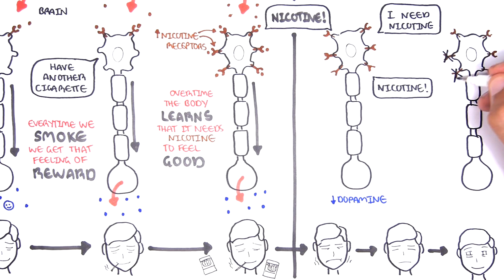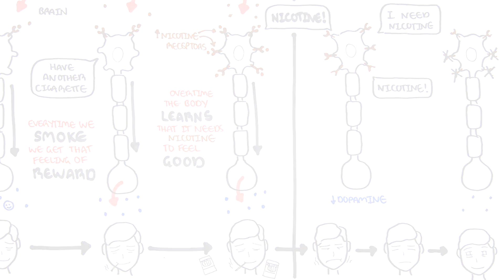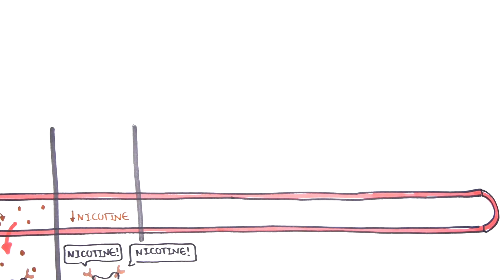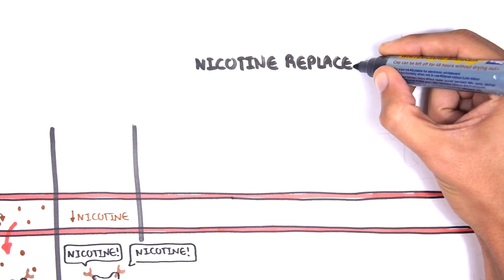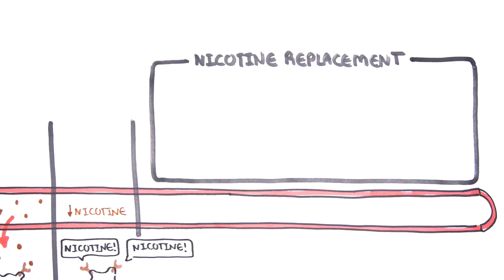But the good news is that over time, there are fewer and fewer nicotine receptors as your brain goes back to the way it was before you smoked. While you are waiting for your brain to return to the way it was, there are scientifically proven ways you can help ease some of the withdrawal symptoms. One of these is nicotine replacement therapy, or NRT.